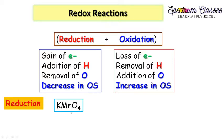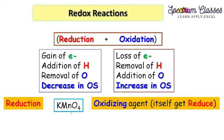Here is where it gets confusing: we say KMnO4 is an oxidizing agent, but at the same time we say it gets reduced. How can we understand these two seemingly contradictory terms? KMnO4 is called an oxidizing agent because it gains electrons from the other reactant present in the reaction.